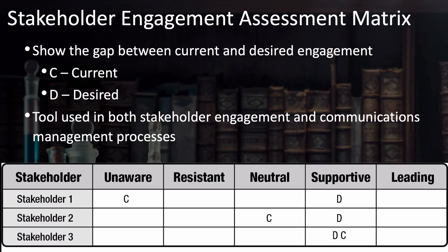Looking at the stakeholder engagement assessment matrix: stakeholder one is currently unaware of the project but you'd like them to be supportive; stakeholder two is currently neutral but you'd like them to be supportive; stakeholder three is already where you want them — supportive. This table doesn't currently show anyone as resistant, which is actually not very realistic — you'll very likely have at least some stakeholders that are somewhat resistant, especially at the beginning. For those who are neutral, you'll probably want to keep an eye on them, because as they learn more about the project they'll likely make a decision one way or the other.